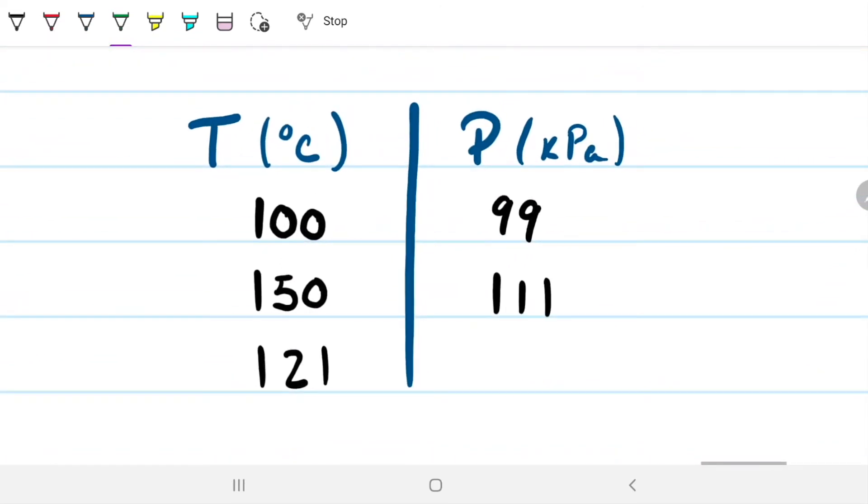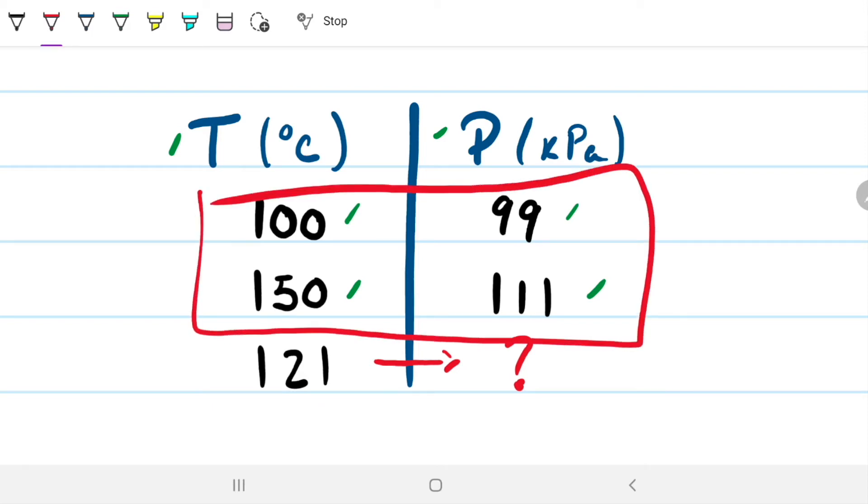So here we have an example from a steam table. This is not precise, but it's good enough for our problem. I have temperature on the left side and pressure on the right side. So at 100 Celsius, we have 99 kilopascals of pressure. At 150 Celsius, we have 111 kilopascals. And the question is, at 121 Celsius, what will be my pressure? So considering a linear interpolation between these two discrete values, what will be the value for the pressure at 121 Celsius?